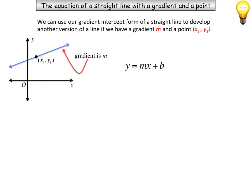So if we just had a straight line, that blue line has a particular gradient m and a single point, we'll just call it x1, y1. We can substitute that point into our equation y equals mx plus b.